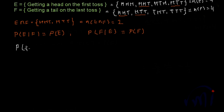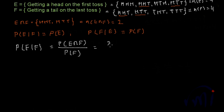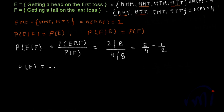The probability of E given F has already occurred equals P(E∩F) divided by P(F). P(E∩F) equals 2/8, and P(F) equals 4/8. So P(E|F) = (2/8) ÷ (4/8) = 2/4 = 1/2. And P(E) = 4/8 = 1/2. So in this case, P(E|F) and P(E) are both equal to 1/2.